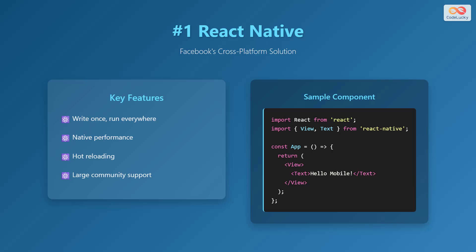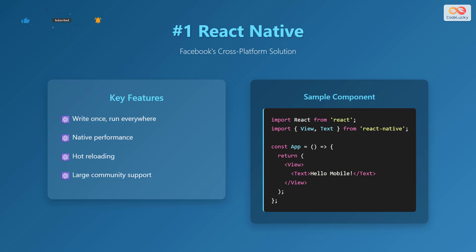First up, we have React Native, which is Facebook's cross-platform solution. Some of the key features include write once, run everywhere, native performance, hot reloading, and large community support. The sample component code shows a simple React Native application that imports React and the View and Text components from the React Native library, then defines a functional component called App that returns a View containing the text 'Hello Mobile'.